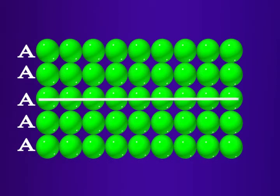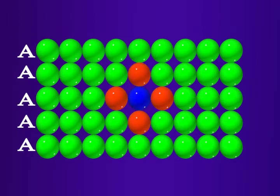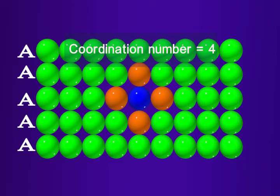Notice that the centers of all the spheres are in a straight line. Each sphere is in contact with four of its neighbors and hence the coordination number is 4.